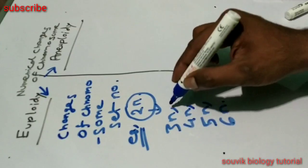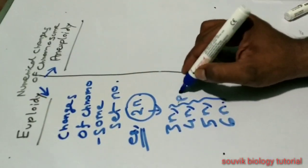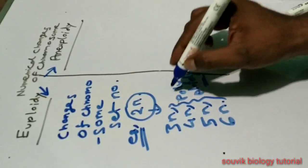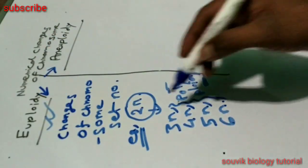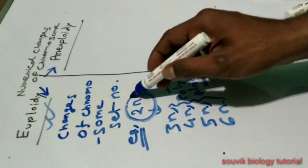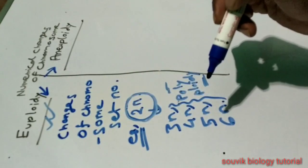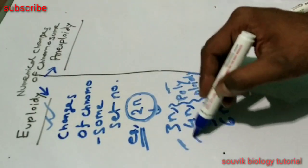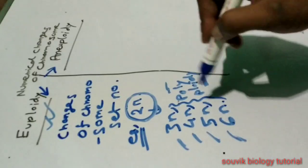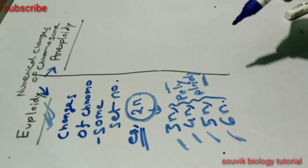Polyploidy is included in euploidy. Here what happens is the diploid set is completely changed to triploid set, tetraploid, pentaploid, hexaploid. So this is euploidy — in simple words, changes of chromosome set number.